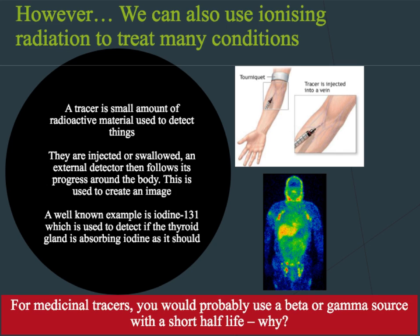In medicine we can use radioactive isotopes as tracers. A tracer is a small amount of radioactive material used to detect things, for example tumours or thyroid problems. An external detector then follows the progress of the tracer around the body to create an image. A well-known example is iodine-131, which is used to detect if the thyroid gland is absorbing iodine as it should.